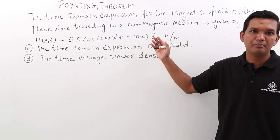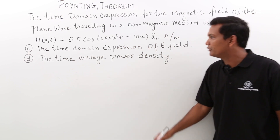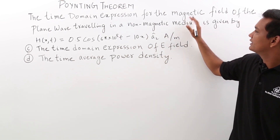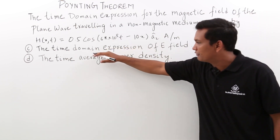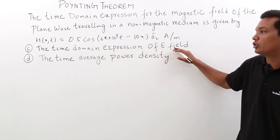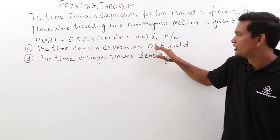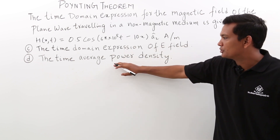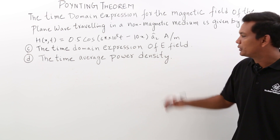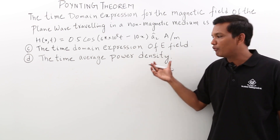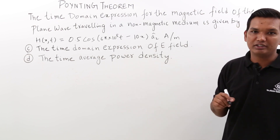In this class, we will continue with the same problem and try to solve the C and D parts. The problem gives a magnetic field by a specific expression. We need to find the time domain expression of the E field — the magnetic field is given, and we have to conclude on the electric field. The second part of the question asks us to find the time average power density, which we have already derived how to find in previous videos.